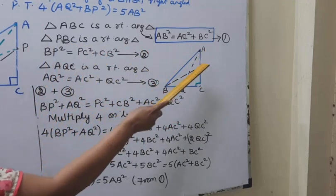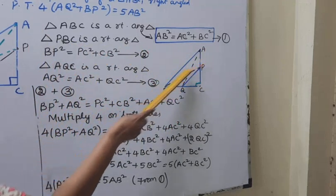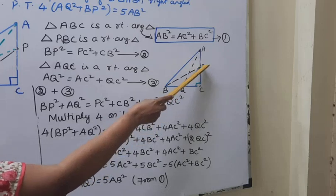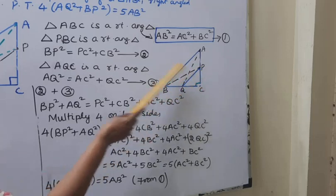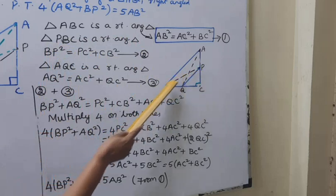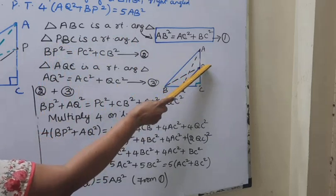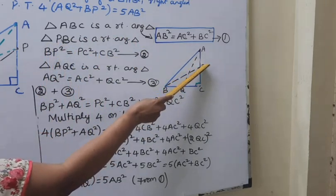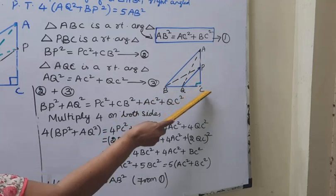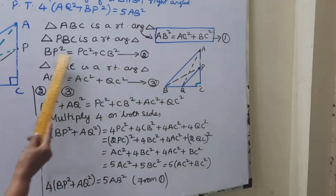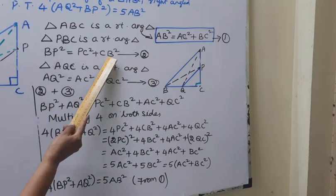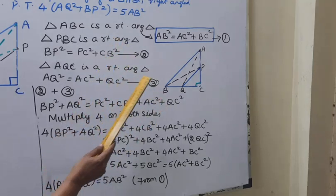Next, consider triangle PBC. PBC is a right angle triangle. Applying Pythagoras theorem: BP square equal to PC square plus BC square. That is equation 2.